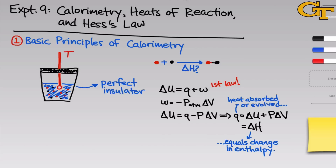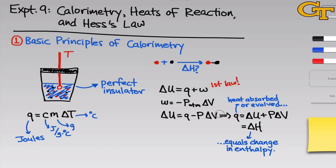This begs the question: how do we measure the heat absorbed or evolved by the chemical reaction? If we're thinking of the calorimeter as a perfect insulator, all the heat released by the reaction has to be absorbed by the surrounding water bath. The key to measuring this is Q equals C times M times delta T — this is essentially the definition of specific heat. The specific heat of a substance is the amount of heat required to raise one gram of the substance one degree Celsius, measured in joules per gram degree C. The other two factors are just the mass in grams and the change in temperature in degrees C. When we multiply through on the right-hand side, the units remaining are joules — the unit of heat.